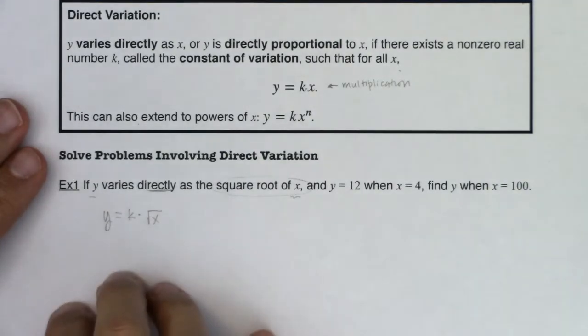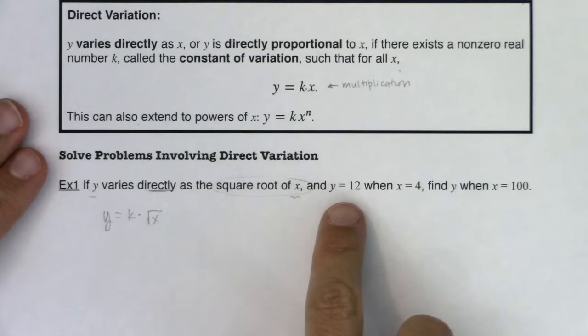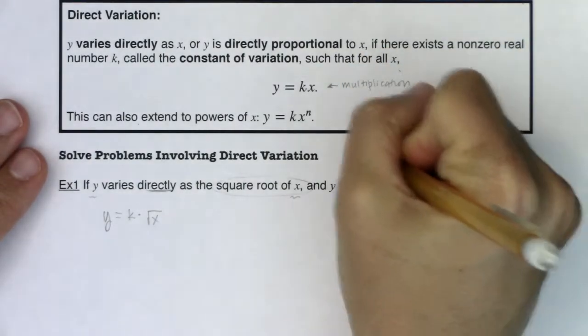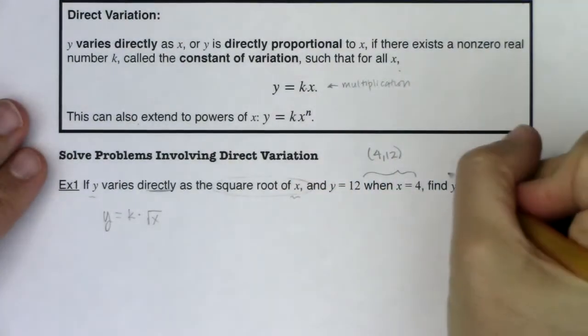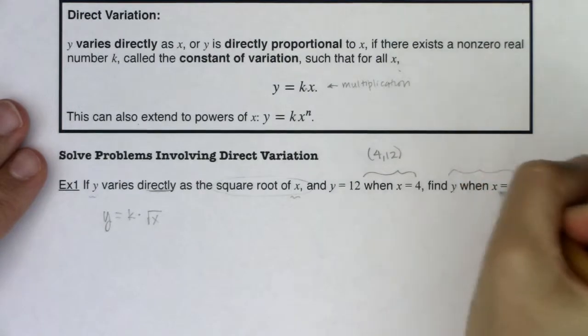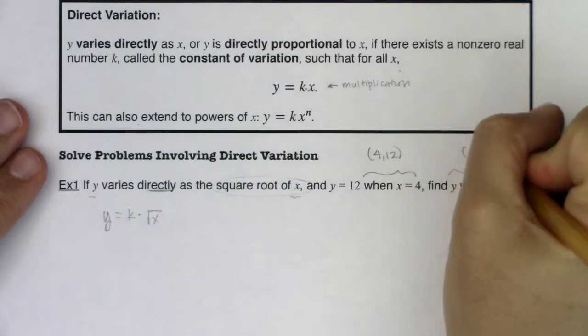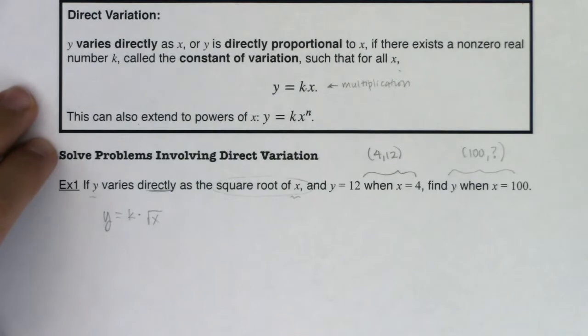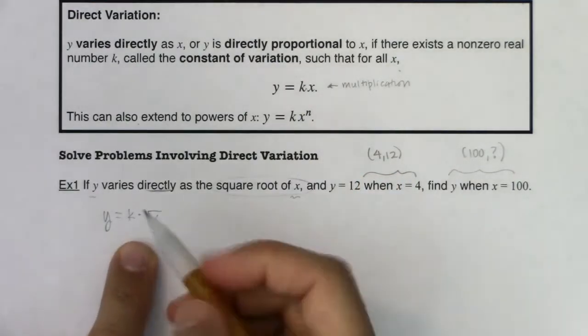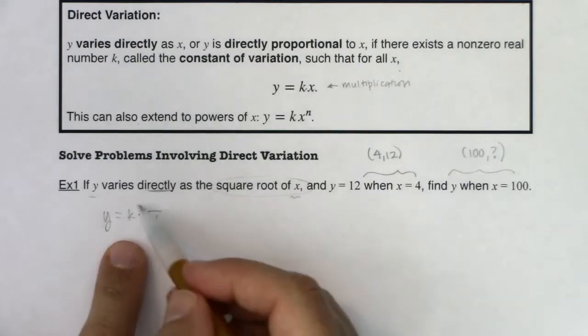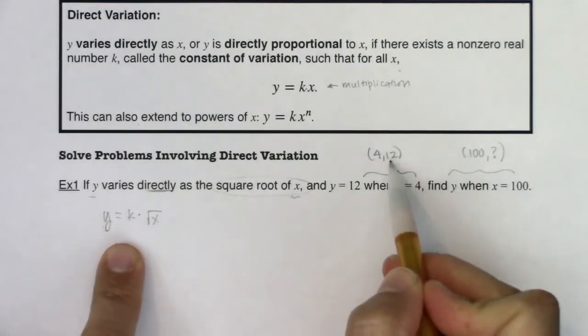And if you look here, I have an ordered pair, we see it y is 12 when x is 4. So from here, I can hear the ordered pair 4 comma 12. And over here, when you say find y when x is 100, there's an incomplete ordered pair, right? They didn't give me y, which is fine. That's how all of these play out. Take the complete ordered pair and plug it into your formula to solve for k. Because if I know y and I know x, I can solve for k. And I do know y and x, right? I know y is 12 and x is 4.